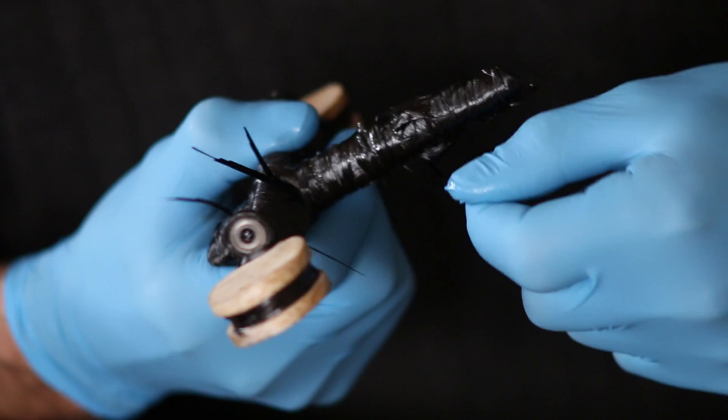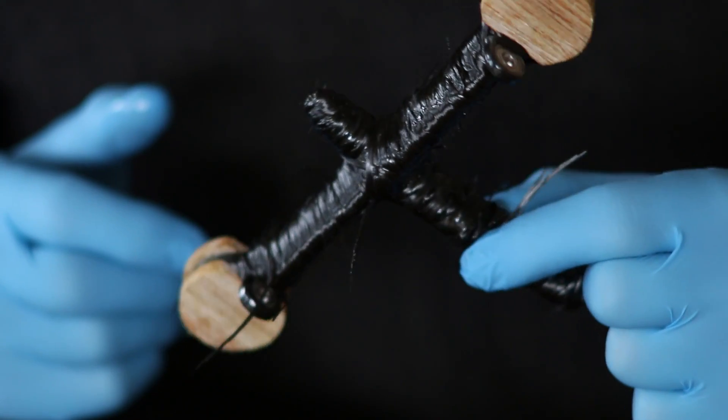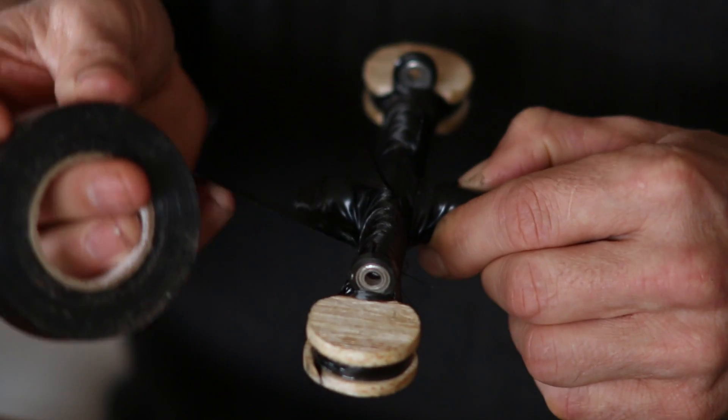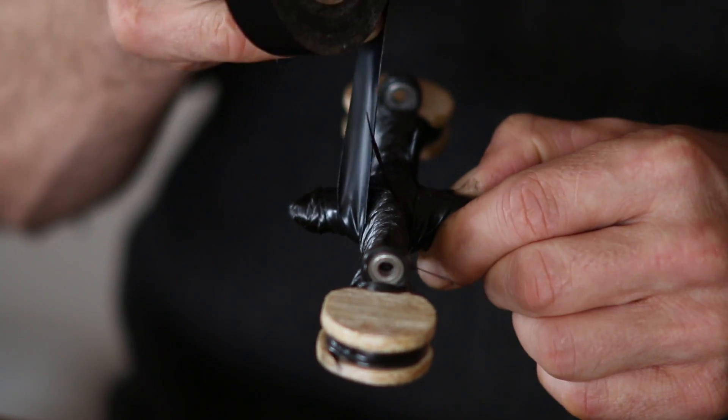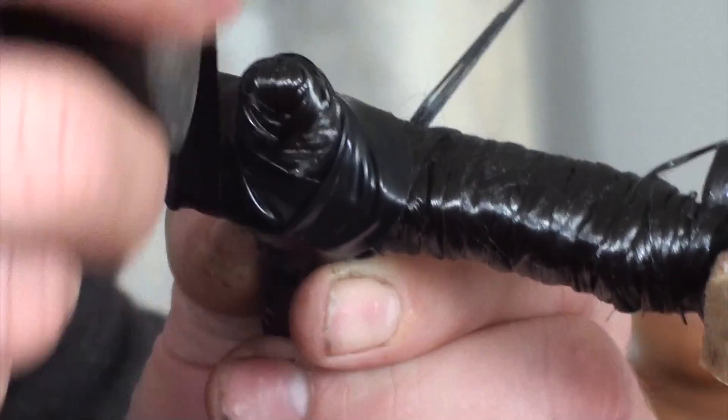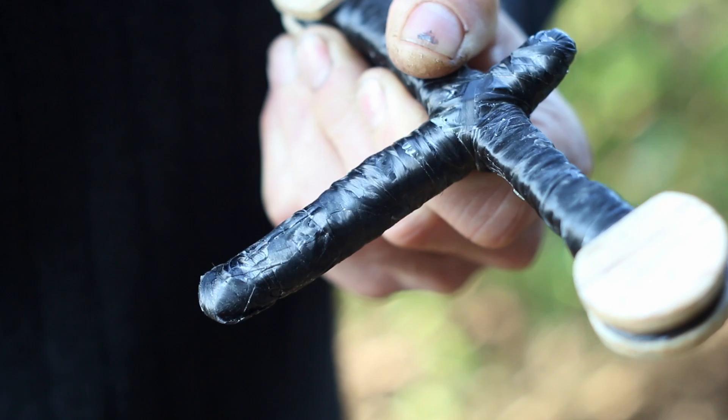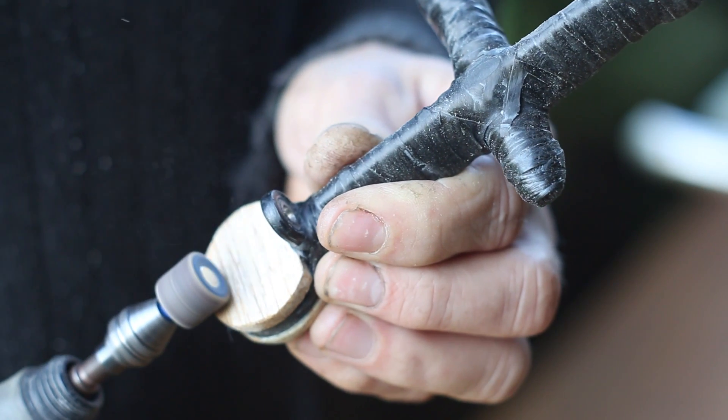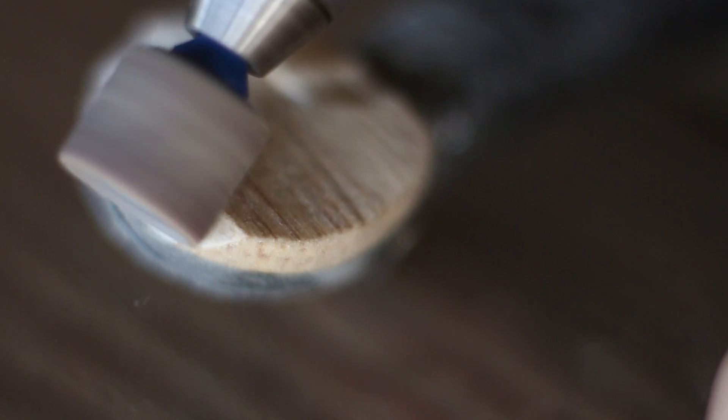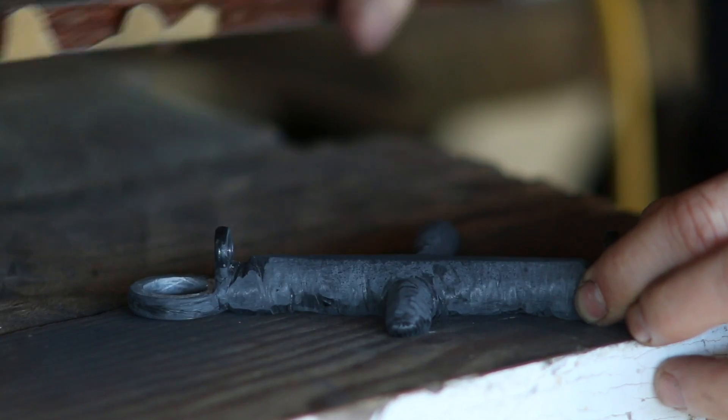Once it's all cured I can then sand it down into the exact shape that I want. Wrapping it with electrical tape is a really good idea because it just crams in all the fibers and it's easily taken off when it's cured. Just carve back the carbon fiber into the shape that I wanted. I did need to do some additional wrapping.